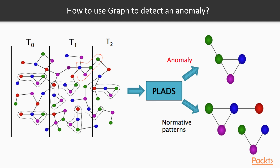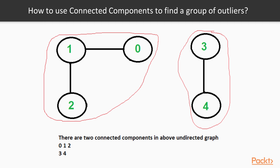A second very important and useful technique in graphs is connected components. We have a graph with five vertices: 0, 1, 2, 3, and 4. We can see two connected components. A connected component is a group of vertices connected with each other. Vertex 0 is connected to 1, and 1 to 2, so 0 is also connected to 2 because we can travel from 0 to 2 through 1. Vertices 3 and 4 are connected to each other, forming a second connected component.